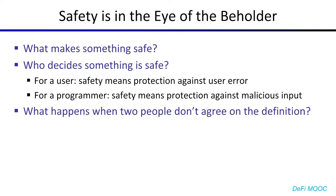For a programmer, safety might actually mean something completely different, namely protection against malicious input. For example, if a hacker is trying to steal tokens or duplicate tokens, a safe contract might not allow them to do that by having various safeguards. So clearly, there's the possibility for different people to have different definitions of what safety means. And when two people don't agree on the same definition, a lot of bad things can happen.